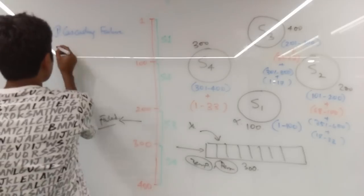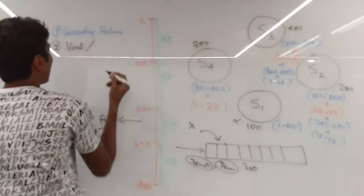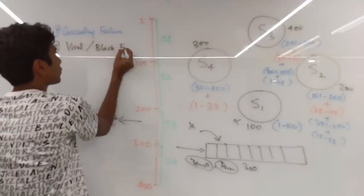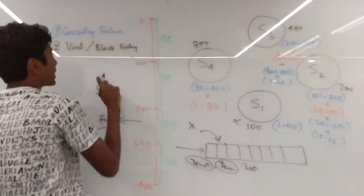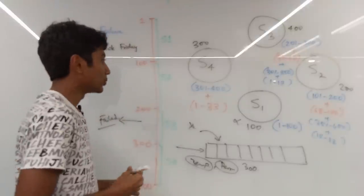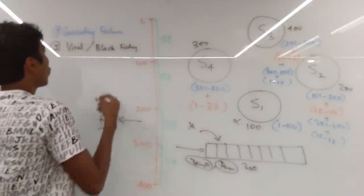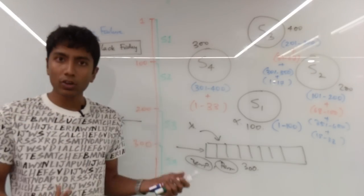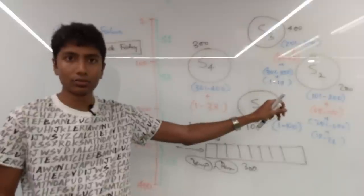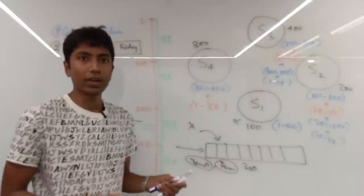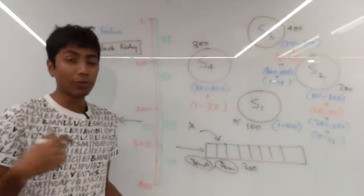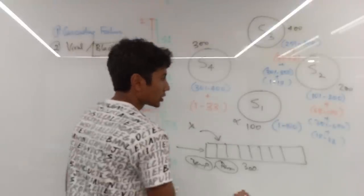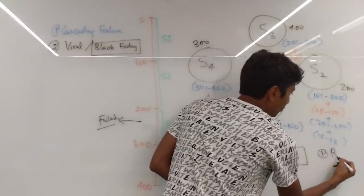The second problem that you can face is if you go viral or if there's some sort of an event, let's say Black Friday. Sales go up on Black Friday, so might be an issue. When you have an event, one of the things you can do is because you have prior knowledge, you can scale beforehand. If you have four servers and you assume that on Black Friday you're going to have 50% more users, get six servers. So that's the first solution, which is pre-scale.